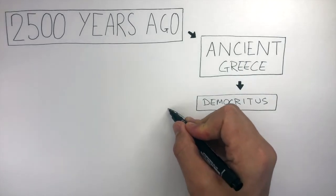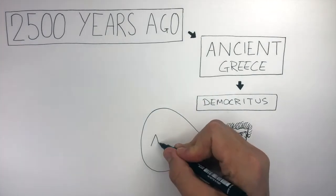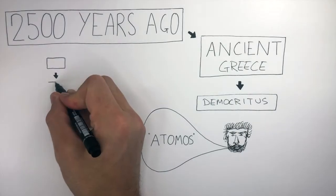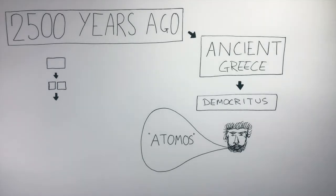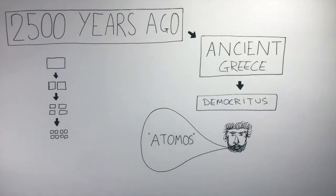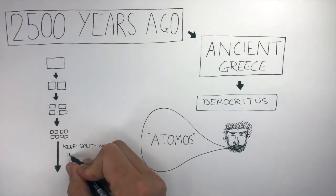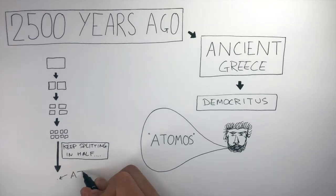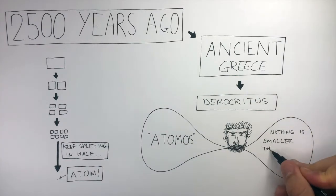Democritus was the first to say everything is made of atomos — this means atom in Greek. He knew if a stone was cut in half, the two halves would have the same properties as the whole stone. If these stones were then cut in half again and again, they would still have the same properties as the original. Eventually, Democritus believed you'd get to something so small it could not be split any further, and he believed this was the atom — nothing is smaller than the atom.